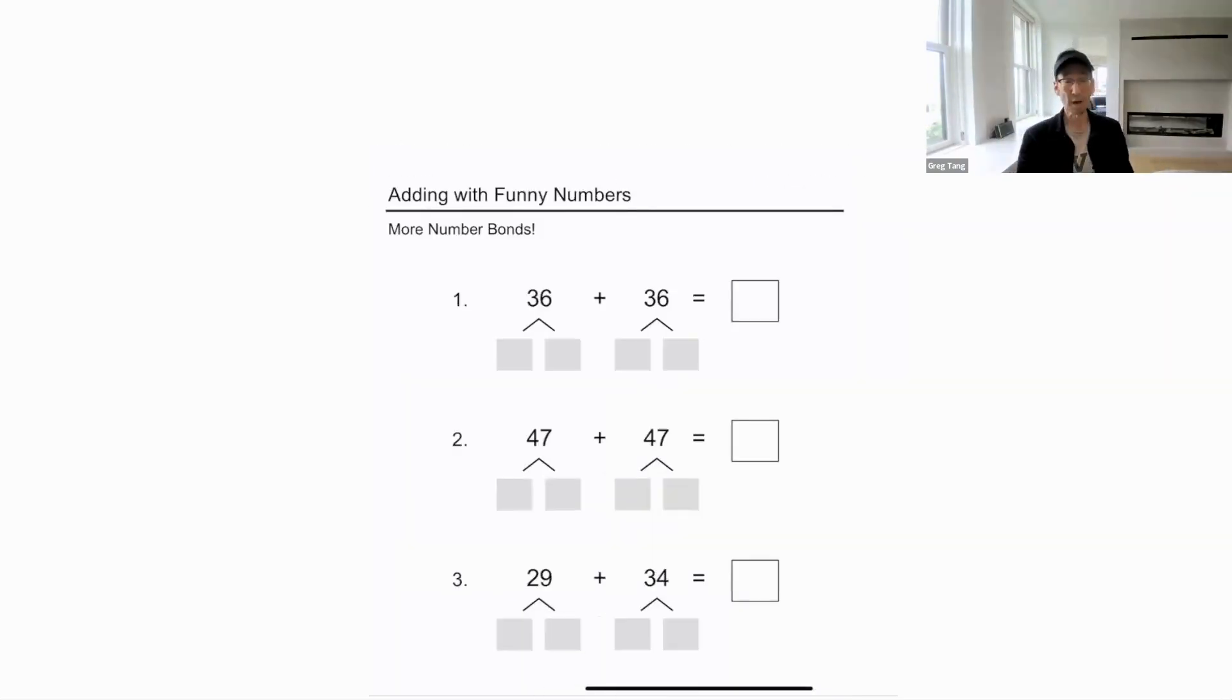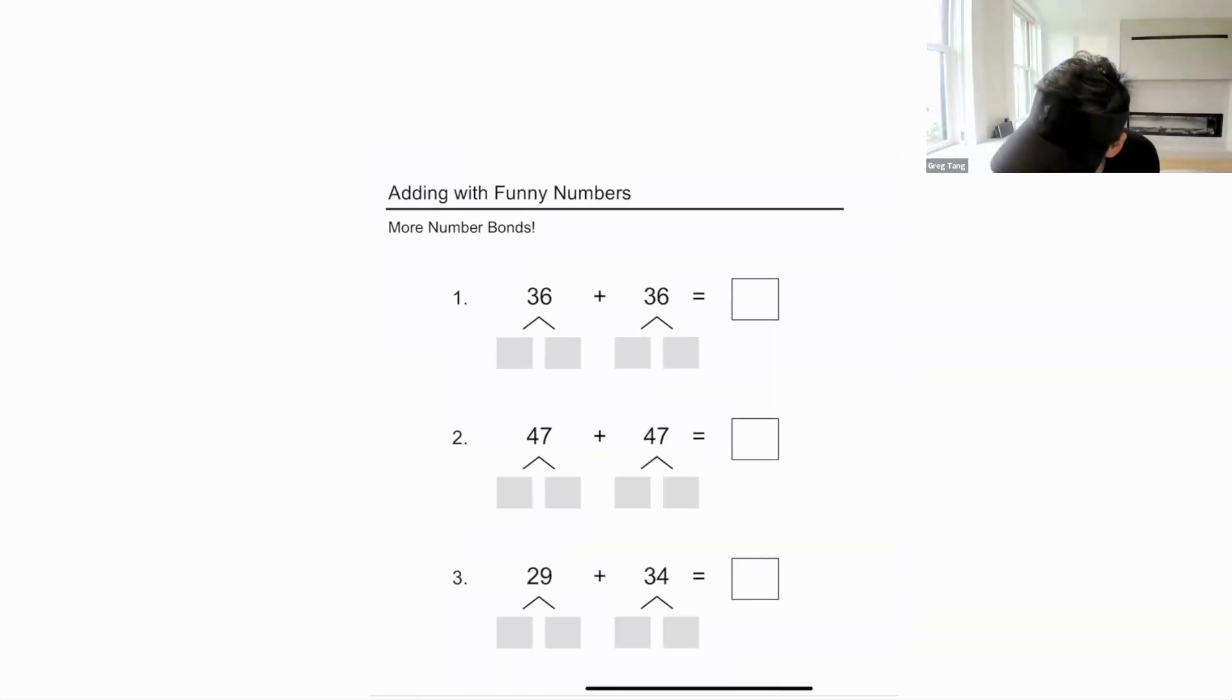Now, look at this now and use funny numbers. What's 36 plus 36? The kid writes out expanded form and then pretty soon they don't need to. What's 30 and 30? 60. What's 6 and 6? What's 60, 12, the same as? 72.